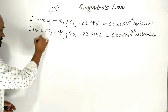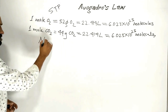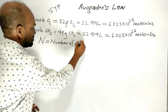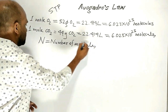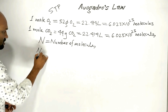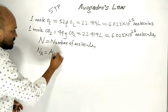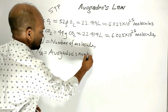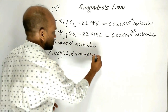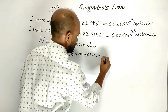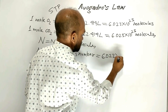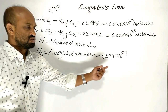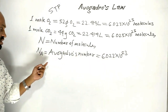Uppercase N means number of molecules and Na means Avogadro's number. Avogadro's number is 6.023 × 10²³. This is Avogadro's number, which is denoted by Na.